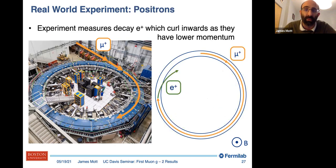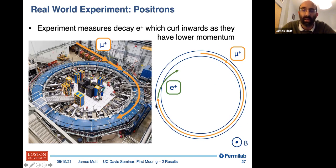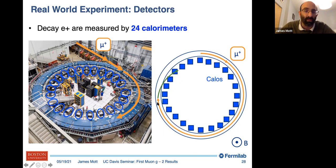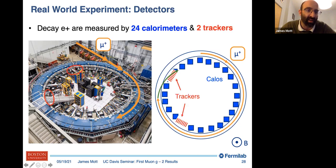We want to know about the muon spin, and we do that by looking at the decay positrons. A muon decays to a positron and a couple of neutrinos. The positron has lower momentum than the muon and curls inward, detected by 24 calorimeters around the inside of the ring. Those are the main workhorse of the experiment. We also have two straw tracker systems at 7 and 10 o'clock which tell us about the beam profile and from where the positrons came.